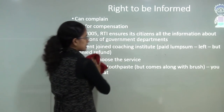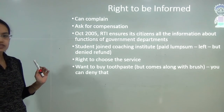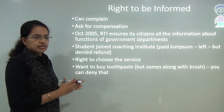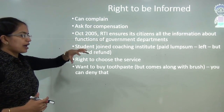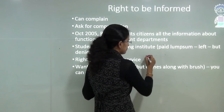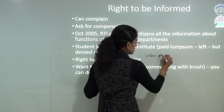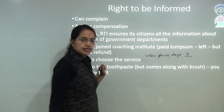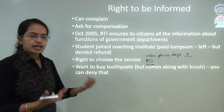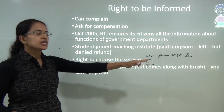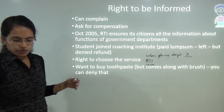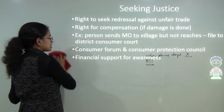In certain cases, recall of articles can also be done. In 2005, the RTI — Right to Information Act — was released, providing citizens the right to obtain information from various government departments. For example, if I am doing research and need data from an urban planning department, and the department denies providing it, I can file an RTI against the department to obtain the required data. This is an example of the right to choose services.